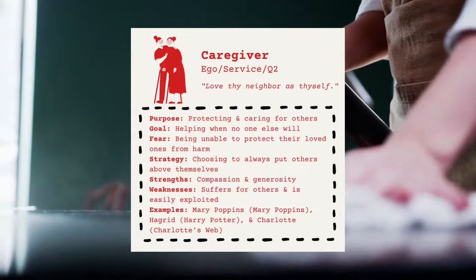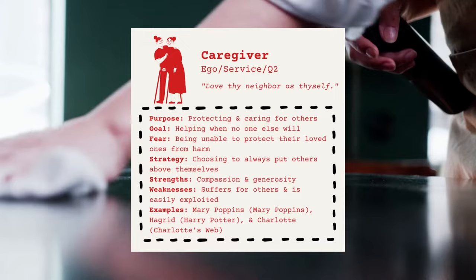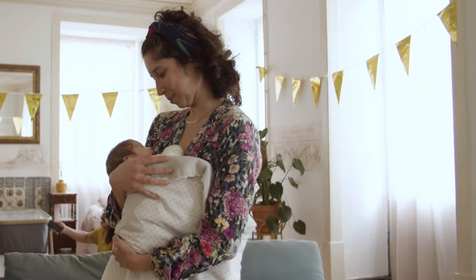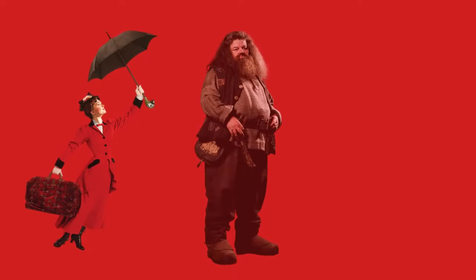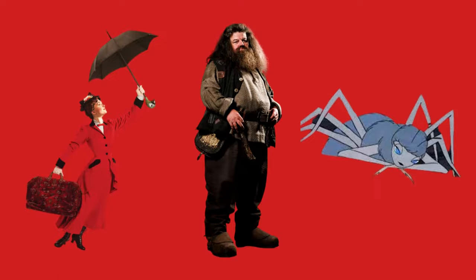The caregiver is an ego-type archetype that believes service is how one creates structure in an unforgiving world. Their purpose is to protect and care for others. These characters help when no one else will, and fear being unable to protect their loved ones from harm. To avoid this, they always choose to put others above themselves. They are compassionate and generous, but they intentionally suffer for others, making them easy targets for exploitation. Famous caregiver characters include Mary Poppins, Hagrid, and Charlotte.